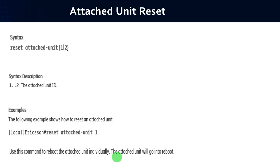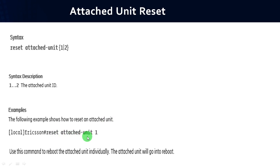If you want to restart an attached unit individually, use the syntax: reset attached-unit <id>. The ids 1, 2 represent attached unit ids. Example: reset attached-unit 1. When you use this command, the specific attached unit is restarted individually.